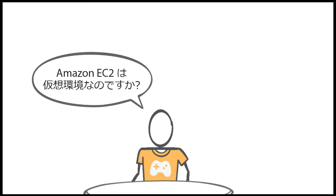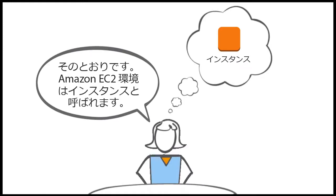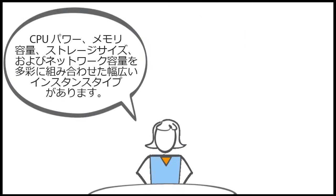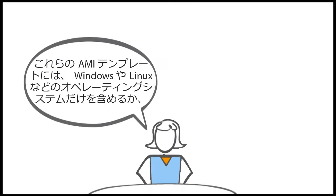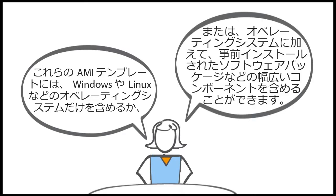So Amazon EC2 is a virtual environment? Exactly. Amazon EC2 environments are called instances. There are a wide range of instance types that have varying combinations of CPU power, amount of memory, storage size, and networking capacity. AWS also provides pre-configured templates for your instances, known as Amazon Machine Images. These AMI templates can include just an operating system, like Windows or Linux, or a wide range of components such as operating systems and pre-installed software packages.